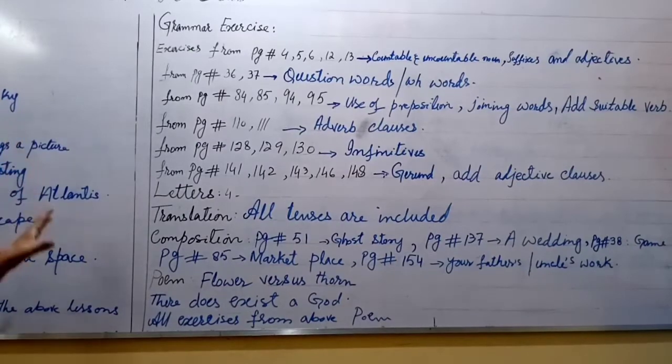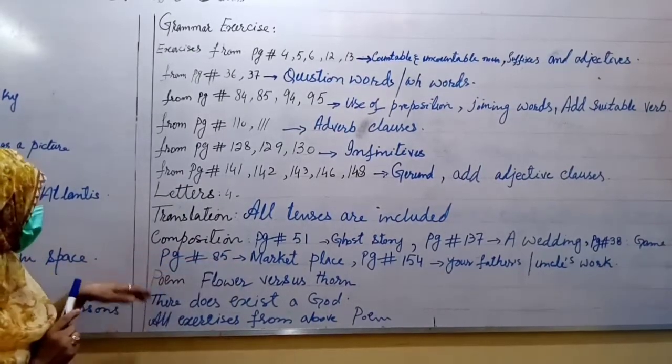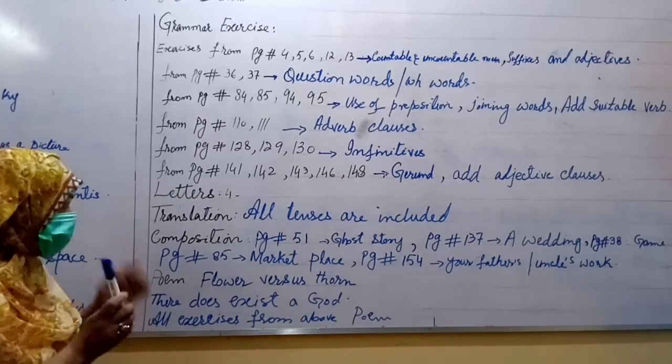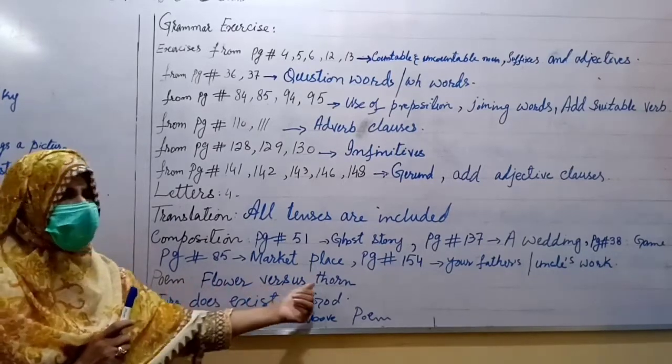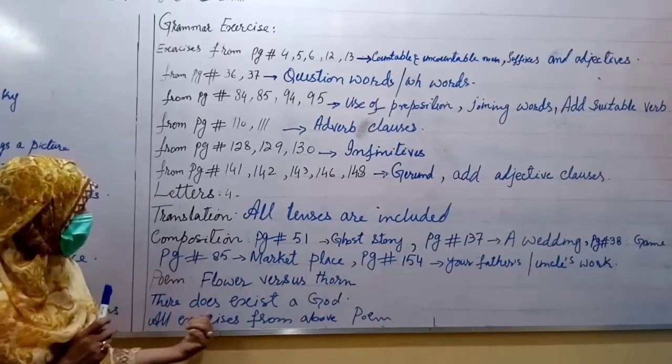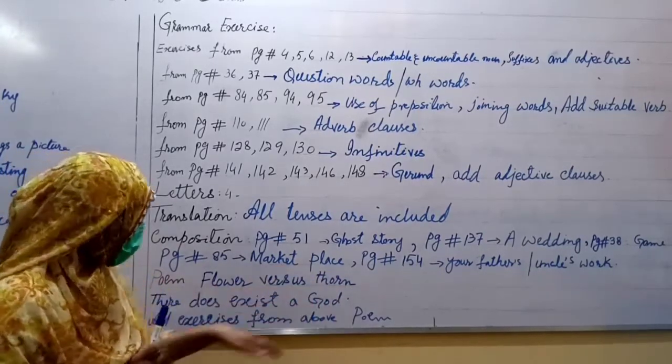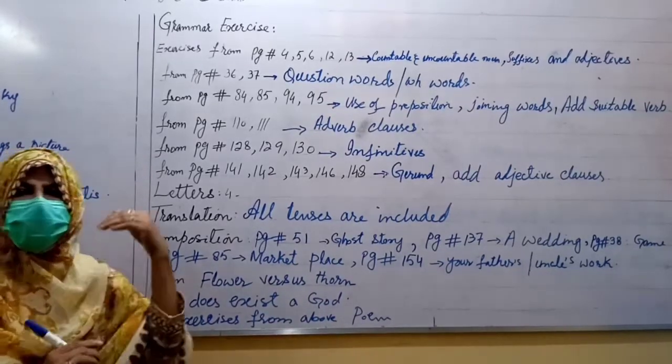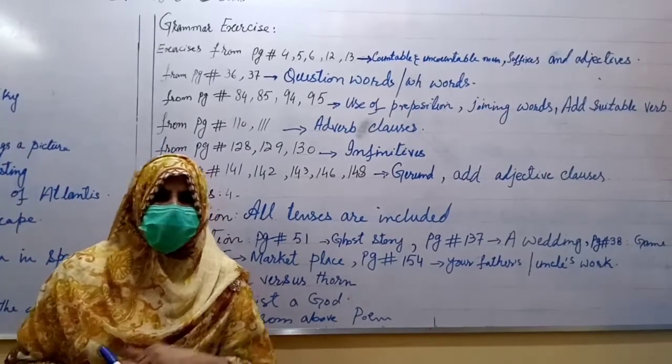Now, the text section and the grammar section is completed here. Let's move towards the poem section. You have learned these two poems: Flower versus thorn, very interesting poem you have learned here, and the next there does exist a girl. From these poems you have done all exercises and rhyming words as well.